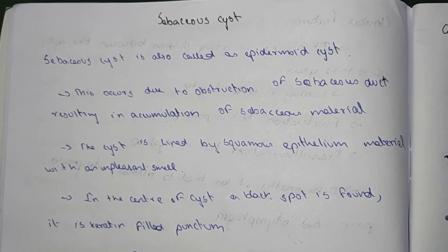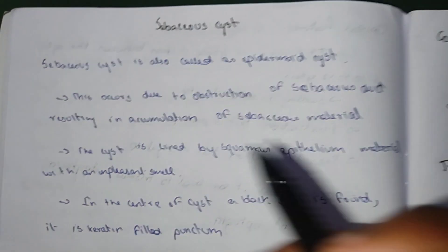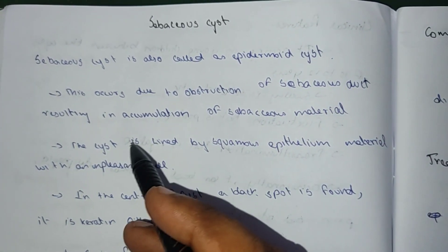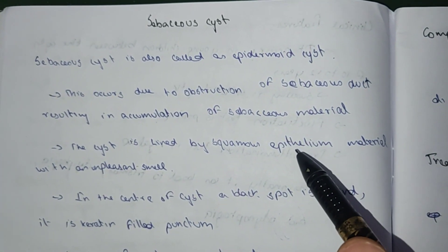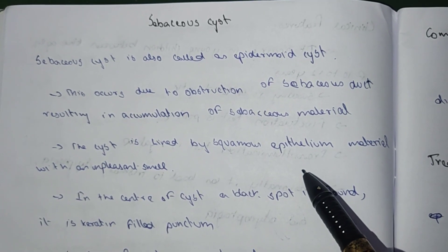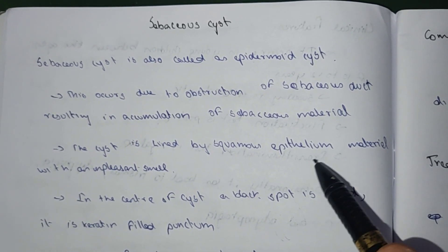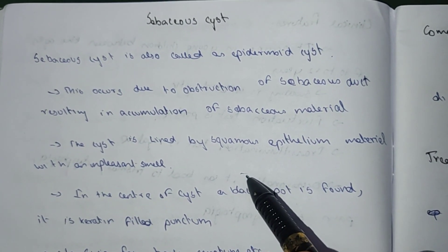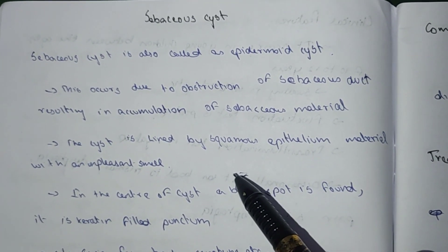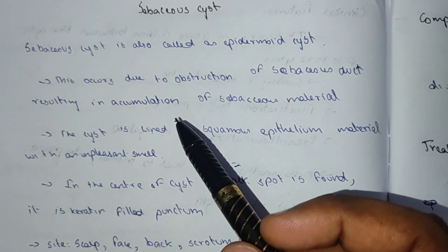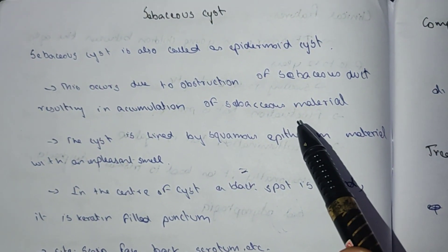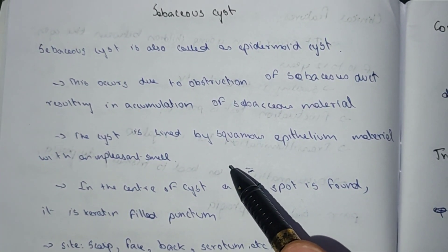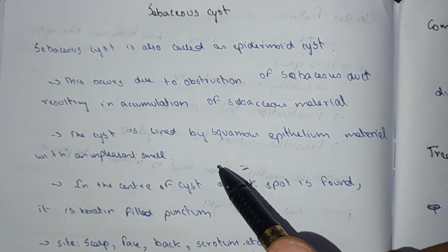Sebaceous cyst is also known as Epidermoid cyst. This occurs due to the obstruction of the sebaceous duct resulting in the accumulation of the sebaceous material.